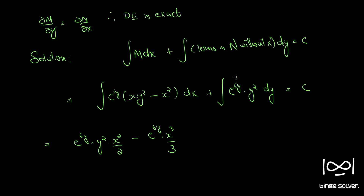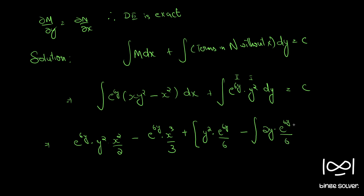For the remaining term e^(6y)·y², we apply integration by parts, taking y² as the first function and e^(6y) as the second function. This gives: y²·(e^(6y)/6) minus the integral of 2y·(e^(6y)/6) dy, all equal to C.